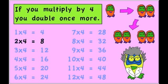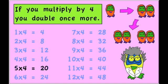Two times four is eight. Three times four is twelve. Four times four is sixteen. Five times four is twenty.